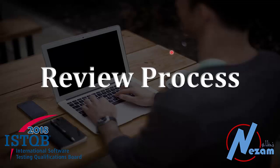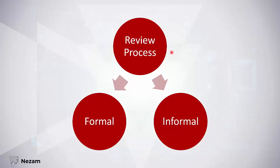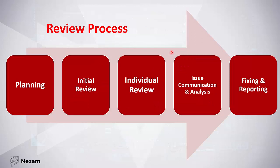The next section in Chapter 3 talks about the review process. In general, we divide our review process into two types: formal reviews and informal reviews. The formal review process has these steps: first, planning; then initial review; then individual review, where each team member reviews the document; then issue communication and analysis; and then the author fixes and reports the defects in the work product.